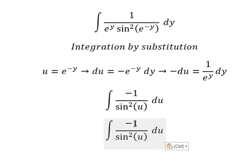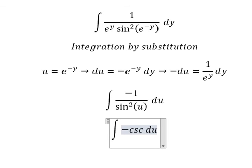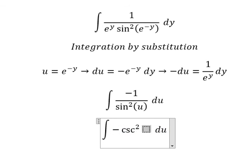So one divided by sine squared u, that is cosecant squared u, and we write it like this with the power of two.